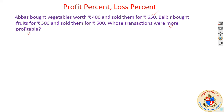The word 'profitable' is very important — it's not just who got more profit, but who is doing better business. In a simple look, Abbas invested Rs. 400 and earned Rs. 650, meaning he earned Rs. 250. As far as Balbir is concerned, he invested Rs. 300 and earned Rs. 500, meaning he earned Rs. 200.